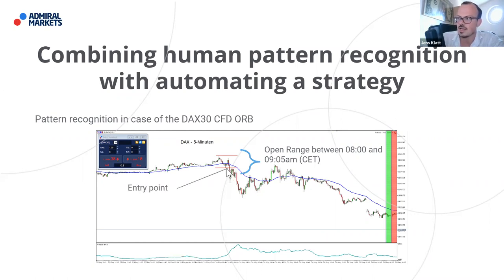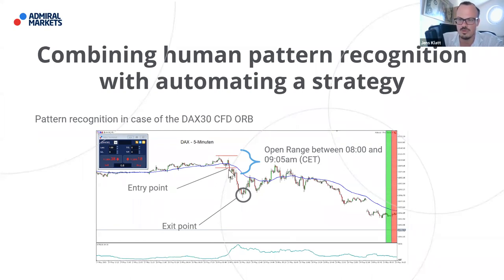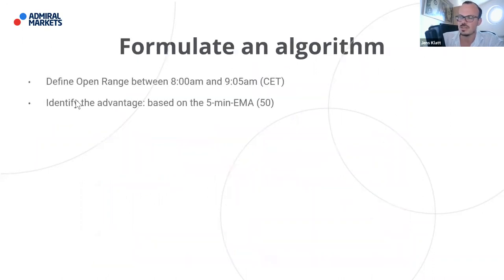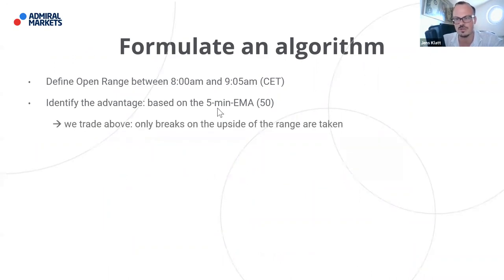That's exactly what happened that day — the entry point is there. I then place the stop at the high of the range and work with a risk-reward ratio of 1:2. So if the risk is, say, 30 points — the difference between the high and low of the range — my take profit is placed at 60 points. Two times 30 is 60, and that's where I take profit in this case. That's the algorithm: define the open range, identify the advantage based on the EMA 50 on the five-minute time frame.